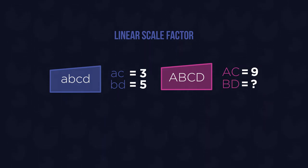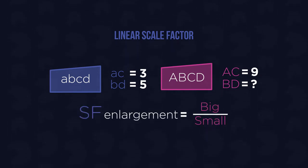BD is on the enlarged figure, so we will need to calculate an enlargement scale factor. We divide the size of the big known side, AC, which is 9, and divide it by the size of the small known side, AC, which is 3. The enlargement scale factor is therefore 3.